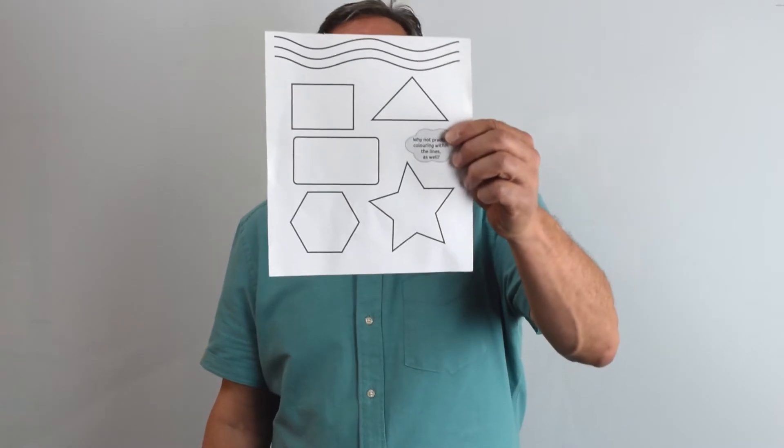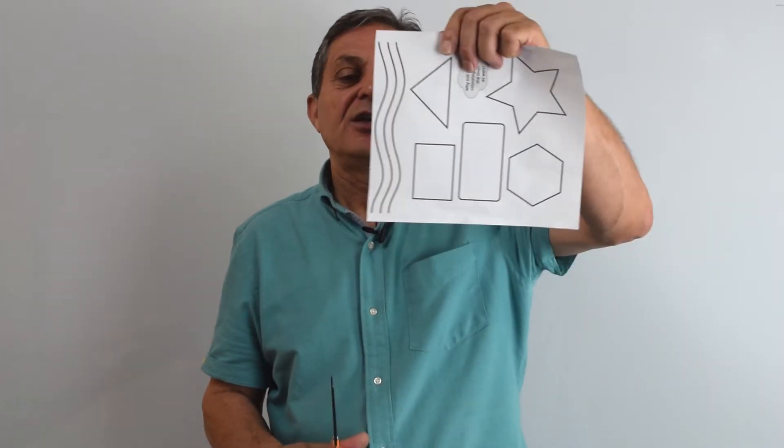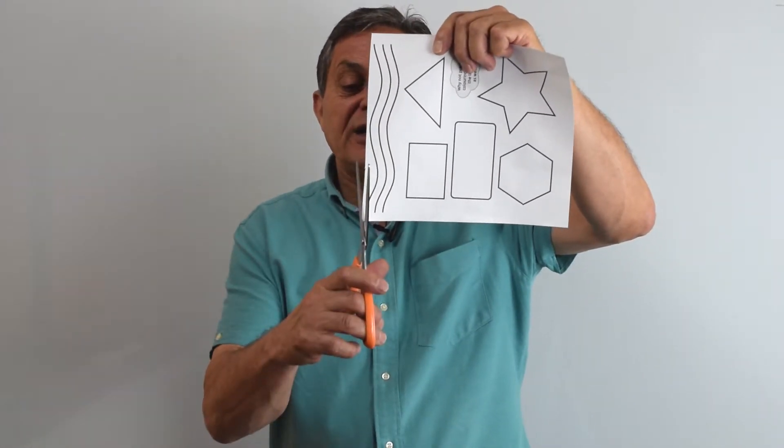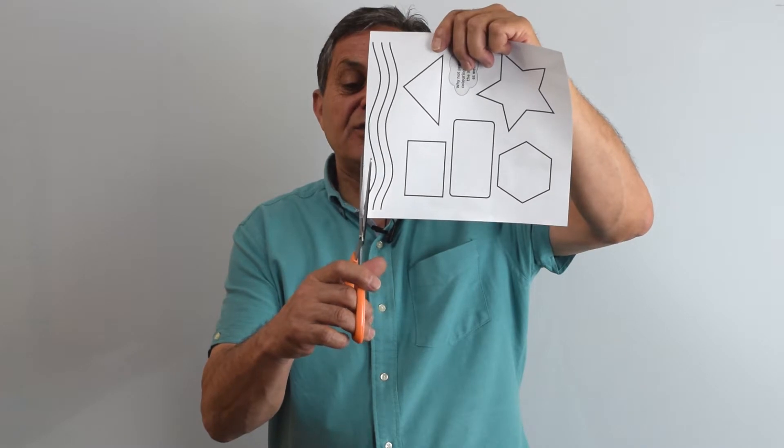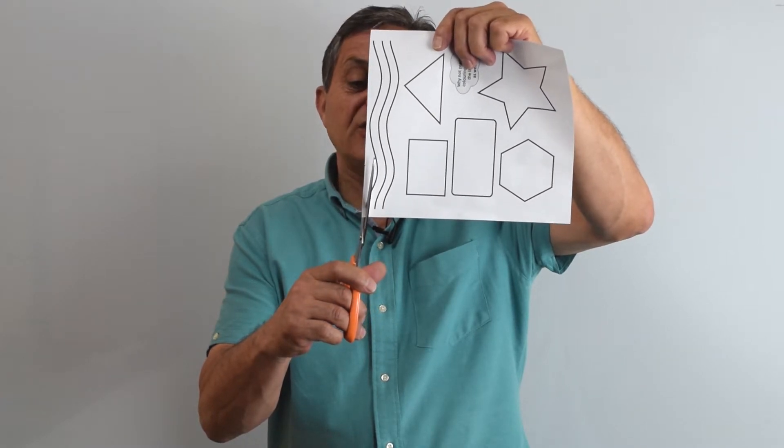If you've downloaded the paper from the website, on the rest of the paper you see some other cutting out exercises to practice. But first of all, let's look at cutting out along a wavy line. So we're going to cut, we're going to be squeezing and pushing the scissors in the correct way, and we're going to try and follow the line.